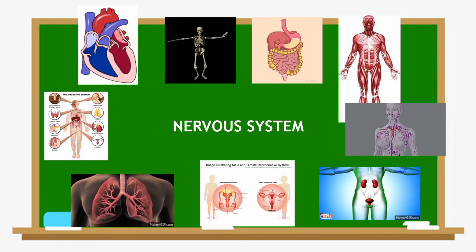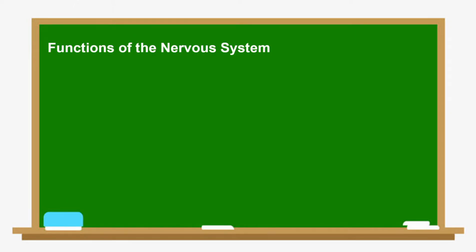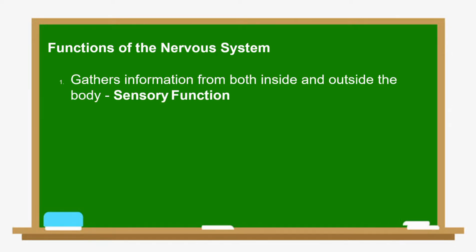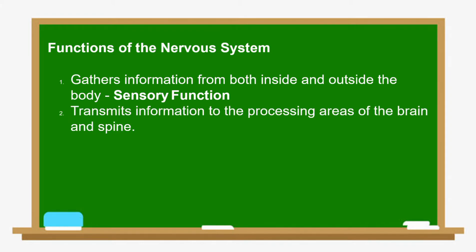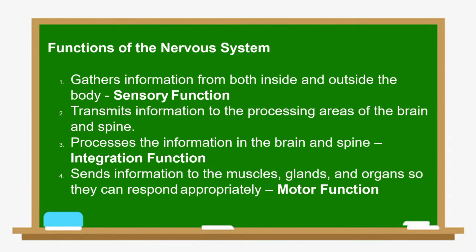This is how the nervous system interacts with other body systems. What are the different functions of the nervous system? First, it gathers information from both inside and outside the body — this refers to the sensory function. Second, it transmits information to the processing areas of the brain and spine. Third, it processes the information in the brain and spine — this is called integration function. Fourth, it sends information to the muscles, glands, and organs so they can respond appropriately — this is called motor function.